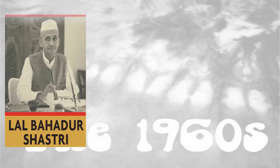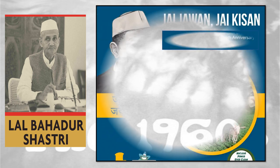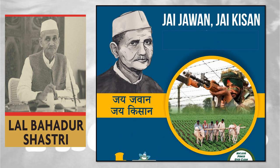Whenever we discuss the simplest personalities in the history of India, former Prime Minister Lal Bahadur Shastri's name comes at the top. His simplicity was the biggest inspiration for the people. Lal Bahadur Shastri succeeded Nehru and became the next Prime Minister of India. 'Jai Jawan Jai Kisan' was the slogan of the second Prime Minister of India, Lal Bahadur Shastri, given in 1965 at a public gathering at Ramleela Maidan in Delhi.